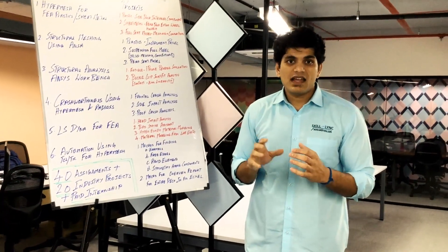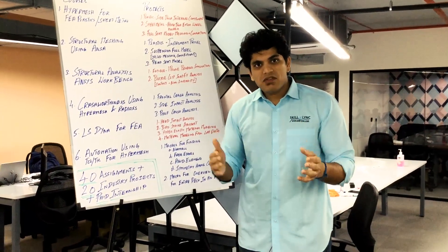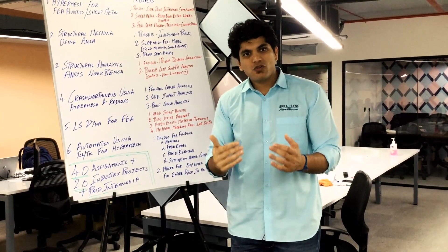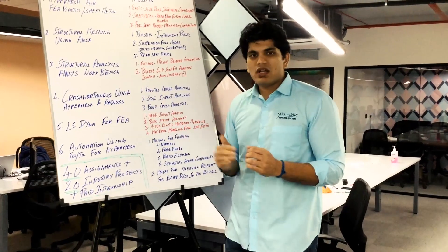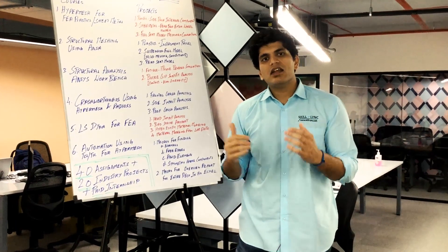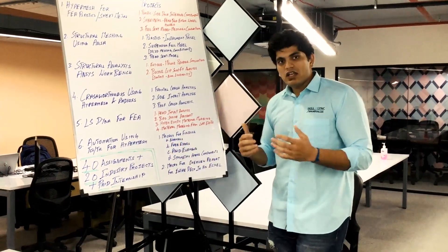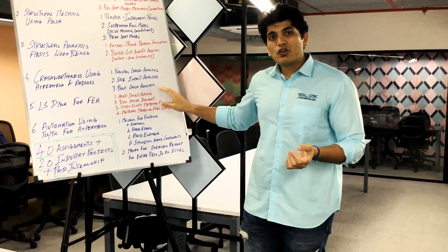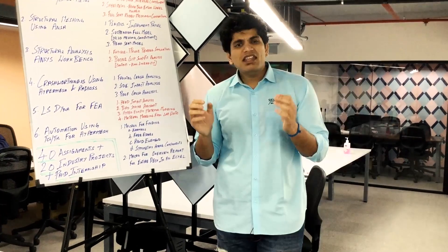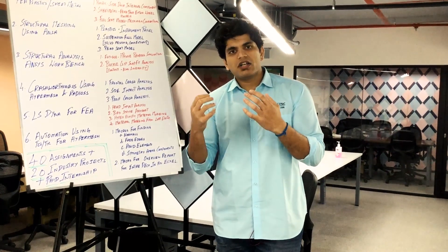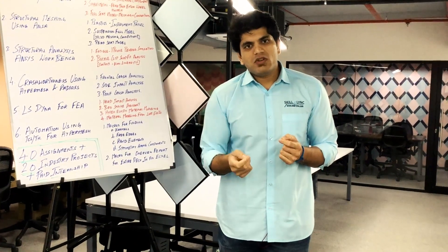The fourth coursework is crashworthiness using HyperMesh and Radioss. The first two courses provide an understanding of pre-processing, and the third coursework introduces you to computer-aided engineering with respect to solving. The fourth coursework takes it one step ahead — you understand the basics of FEA, the fundamentals of crashworthiness, and the regulations aspect of it. Then you go ahead and do simulation projects on frontal car crash analysis, side impact analysis, roof crush analysis, and much more. These are projects that only people in the industry would normally have access to, and our ability to build that expertise in-house and provide those projects is what makes us very unique.